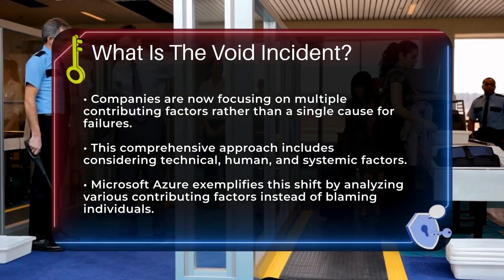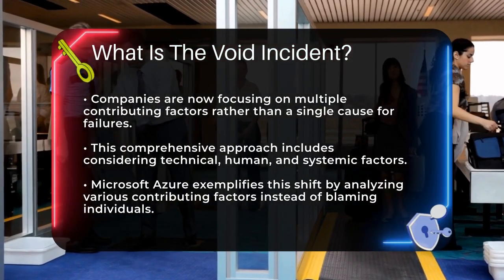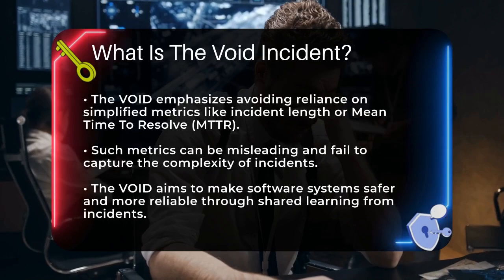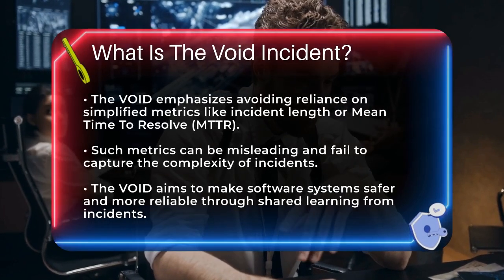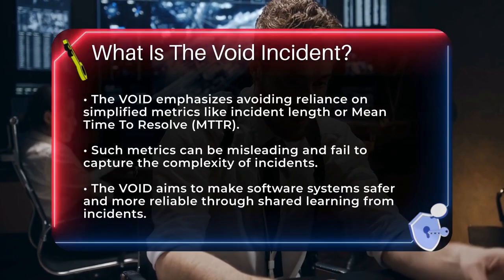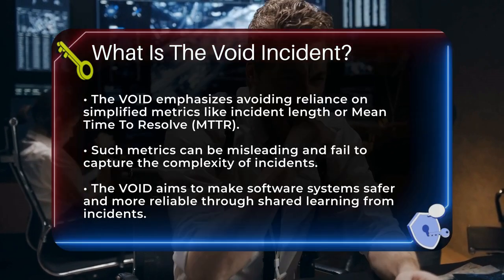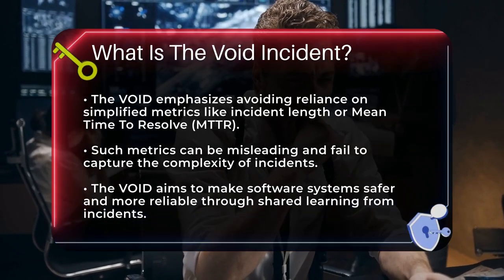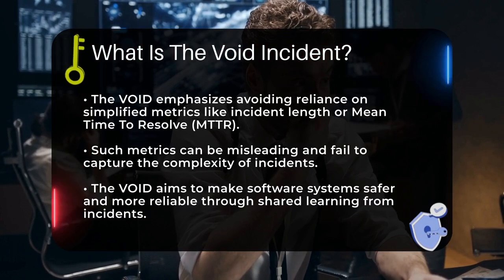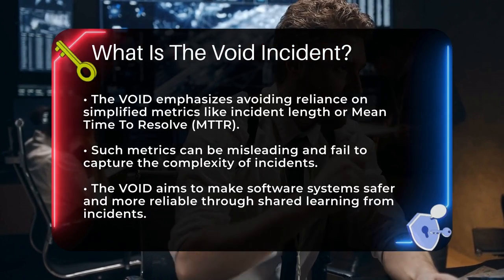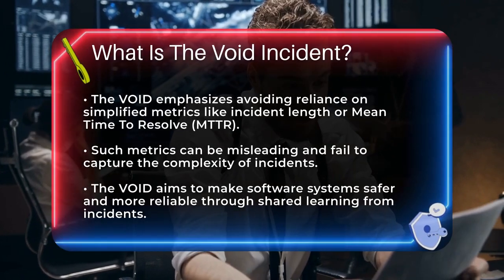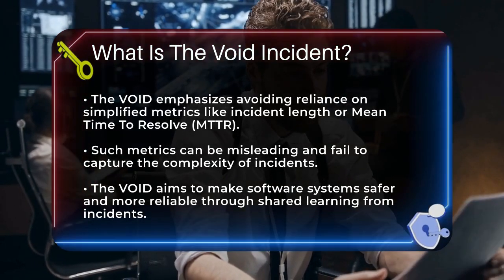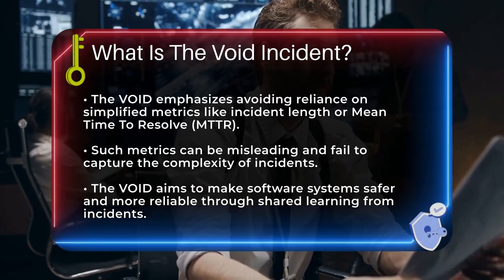This method encourages teams to look beyond just blaming individual humans and instead focus on systemic improvements. The Void also highlights the importance of not relying on simplified metrics like incident length or mean time to resolve, MTTR. These metrics can be misleading and don't capture the full complexity of an incident.